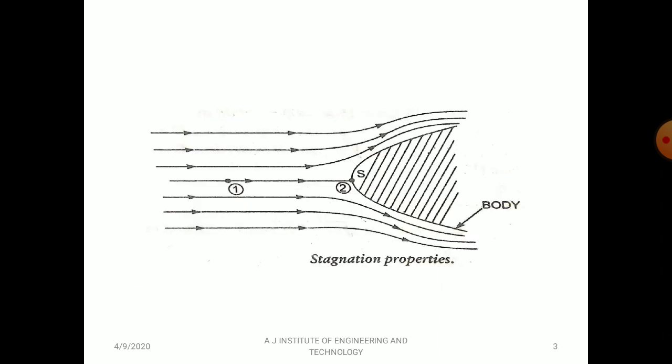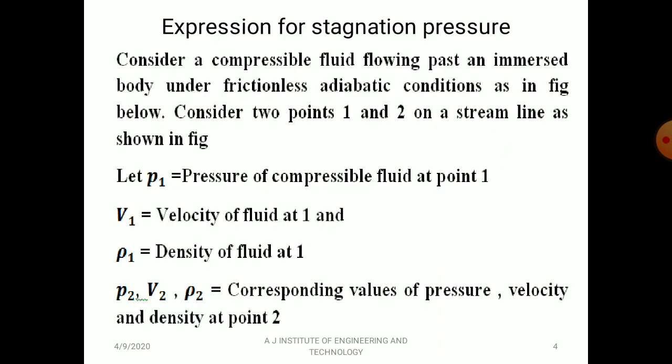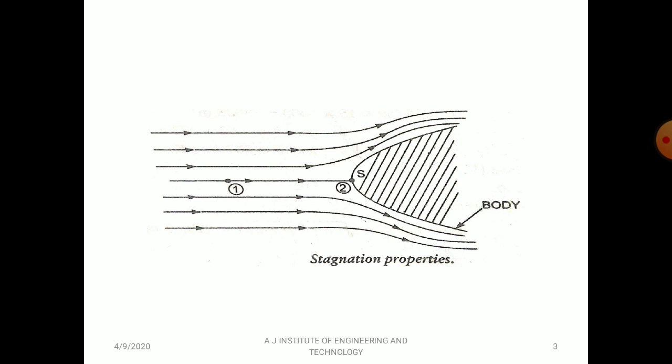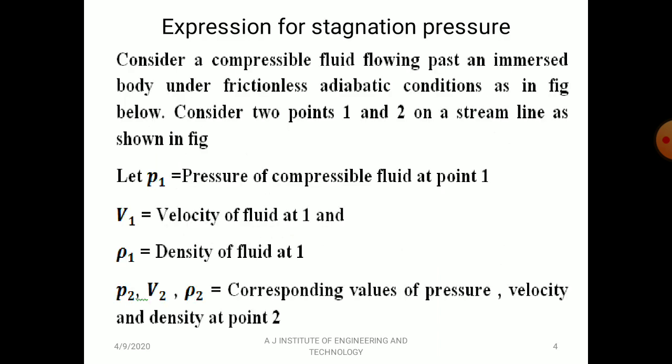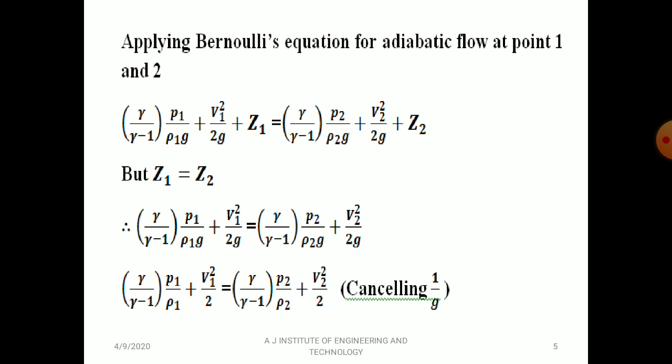Consider two points, one and two, on a streamline. Point one is along the streamline and point two is on the body. Let P1, V1, and ρ1 be the pressure, velocity, and density at point one; P2, V2, and ρ2 are the corresponding values at point two. Applying Bernoulli's equation for adiabatic flow between points one and two.